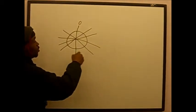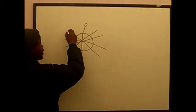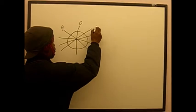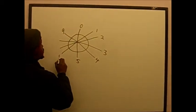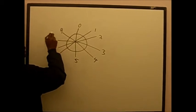We start from zero and we count all the way around to nine. So you got zero, one, two, three, four, five, six, seven, eight, and we got nine there.